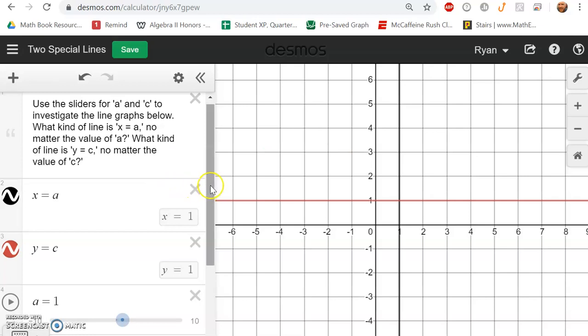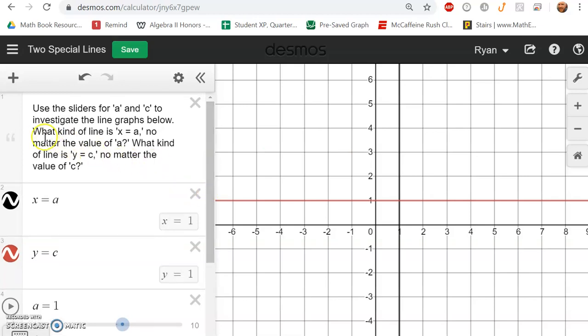Now on this Desmos page, you're trying to answer these questions here. What kind of line is x equals a, no matter what the value of a is, and what kind of line is y equals c, no matter what value c has.